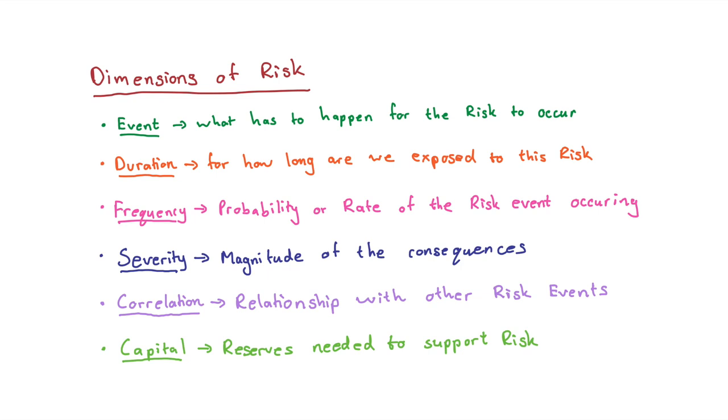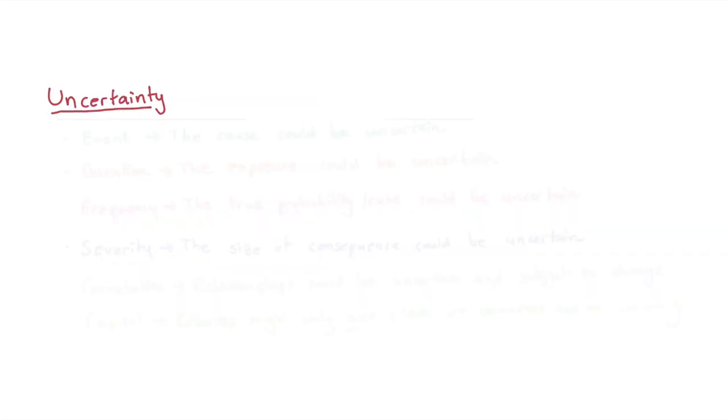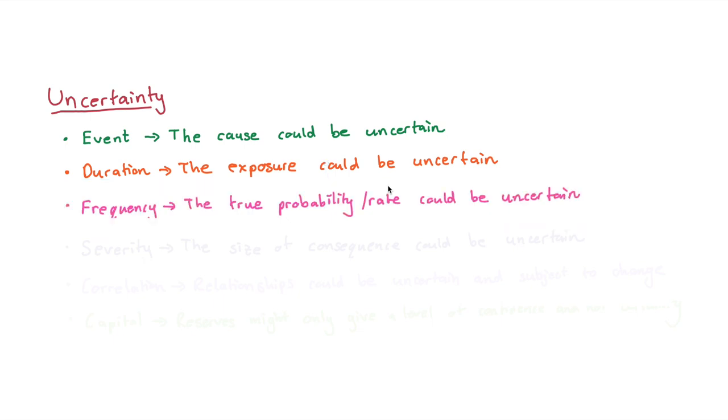What makes risk a little bit confusing or difficult is the fact that we can have uncertainty within each of the dimensions. For instance, the event, the cause could be uncertain. If you're insuring somebody against death, there's many different ways to die. So there's all these various different events that could cause the risk from manifesting. Also, we have duration. The exposure of which you're bound to some risk could be a random variable on its own. Then we sometimes see that we don't actually know what the true probability or rate could be. So once again, frequency could be uncertain.